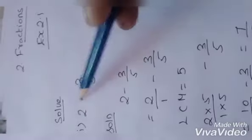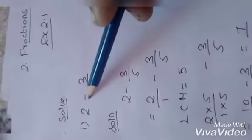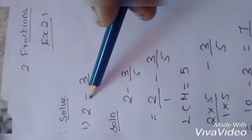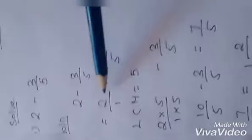Let's look at Exercise 2.1, Problem 1. Just follow the steps, children. The problem is 2 minus 3 by 5. We said one part is a whole number and the other is a fraction. To subtract, we need to make 2 into a fraction. You all know 2 can be written as 2 by 1.